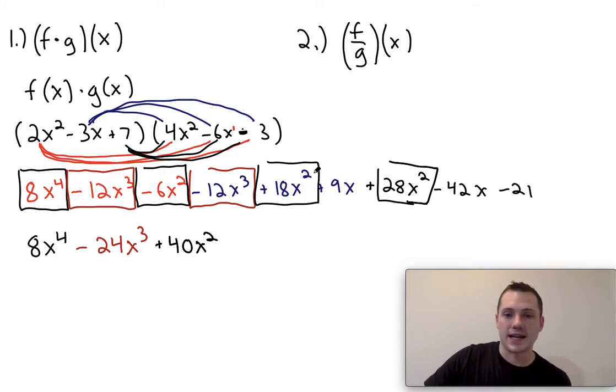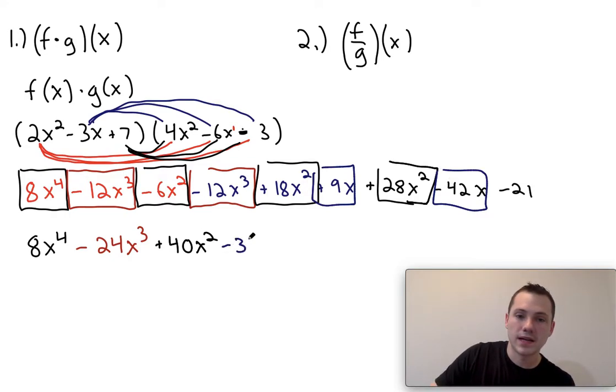Finally we have 9x and negative 42x, which if I subtract those from each other, I'm going to have negative 33. And then at the end I just have that minus 21. And that's it. That's how you multiply it out.